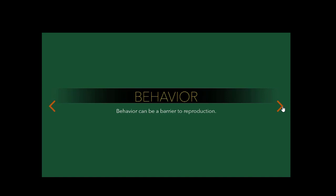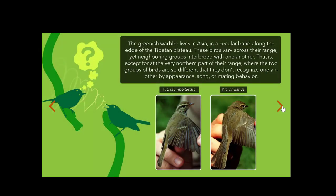Behavior can be a barrier to reproduction. The greenish warbler lives in Asia, in a circular band along the edge of the Tibetan plateau. These birds vary across their range, yet neighboring groups interbreed with one another.